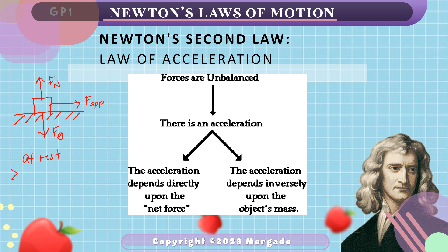Now, why is this so? From the free body diagram, the summation of forces along the y-axis is equal to zero because the normal force and gravity cancel each other out. On the other hand, along the horizontal, the summation of forces is not equal to zero because there is no force contradicting the force applied. Therefore, the net force of the whole system is purely dependent on the force along the horizontal — the force applied — which, from the second law of motion, will cause the object to accelerate.